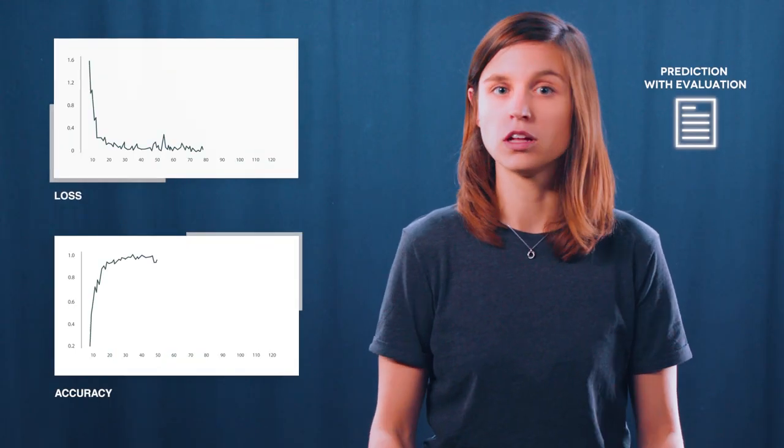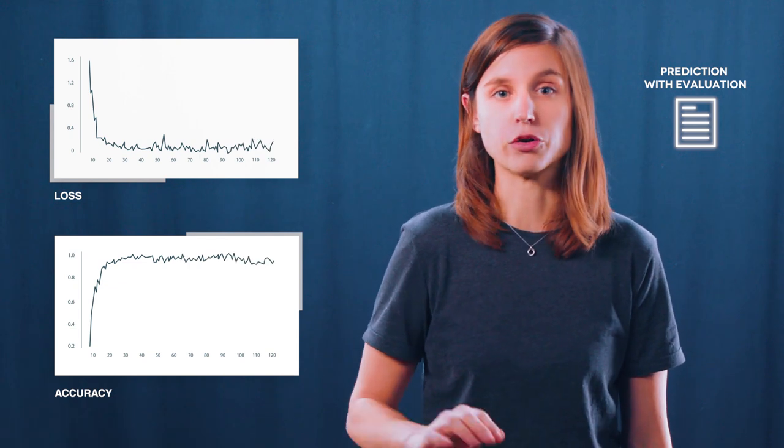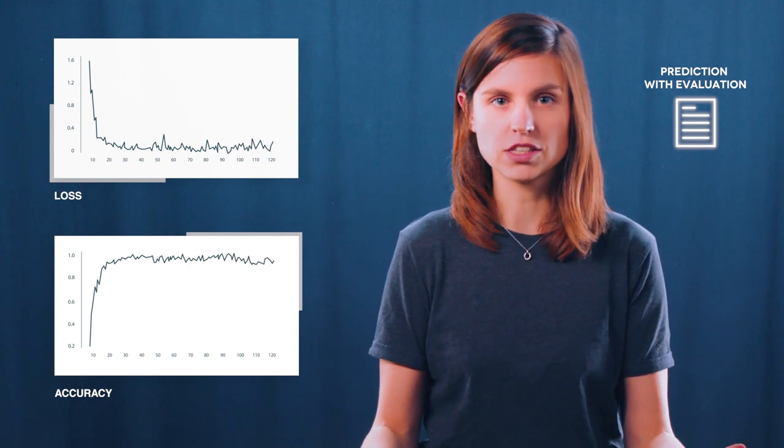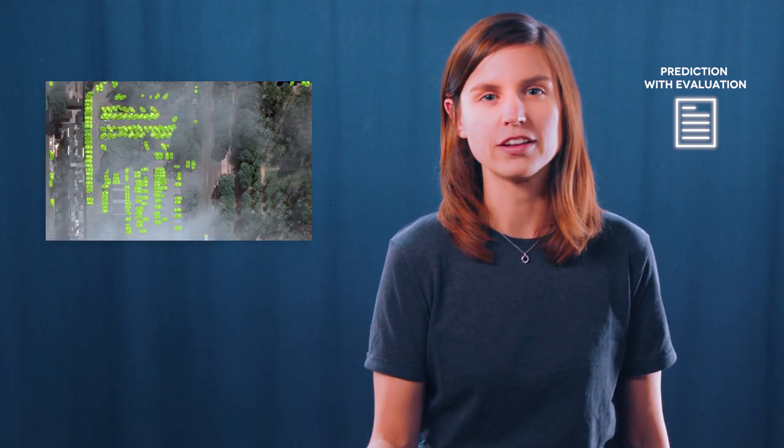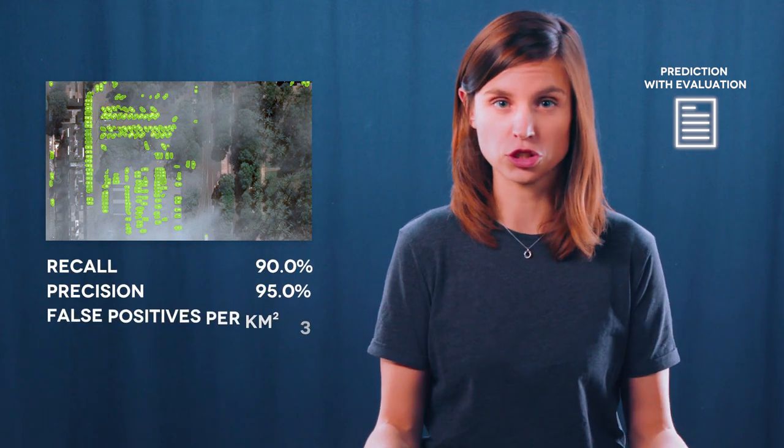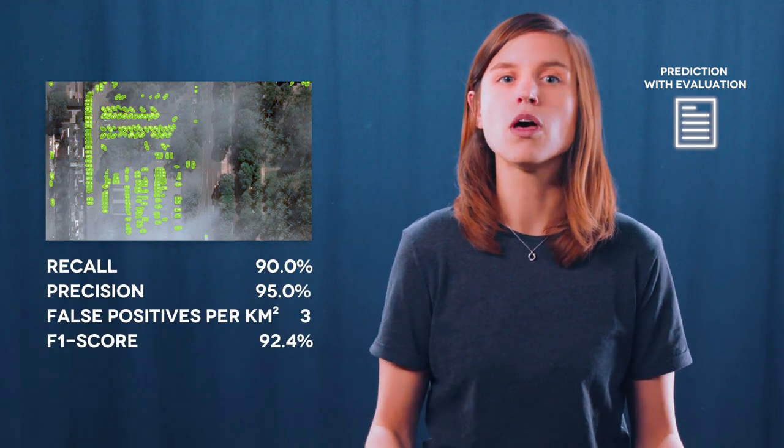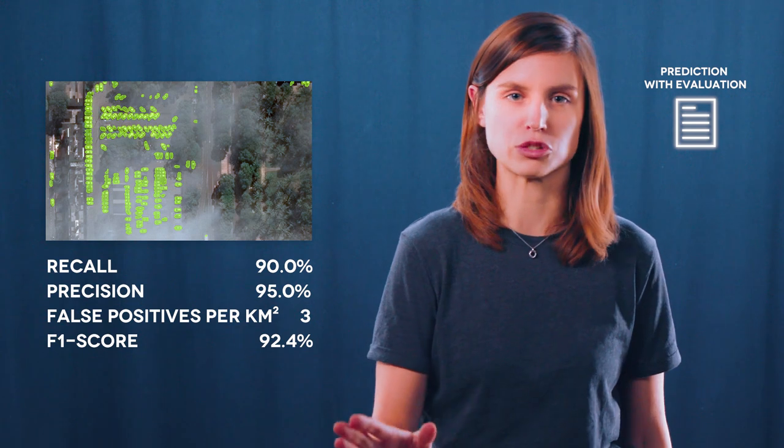Last but not least, the fourth pillar, prediction. Once your model has been trained properly, that is to say, you now have a great dataset, a great model design, and a great training, it's time to predict. Basically, this means that you will finally obtain the recall, the precision, a number of false detections per square kilometer, and the F1 score for your model.